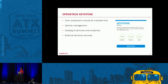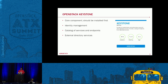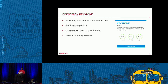Keystone is a core component and should be installed first. It provides identity management and also provides a catalog with services and endpoints. You can connect it to external directory services like LDAP or Active Directory. It's a very mature project. The foundation now shows you adoption, maturity, and age for each project, and you can go look at more details for each specific one.